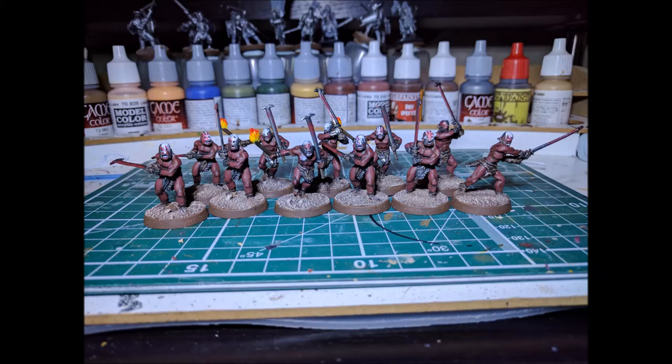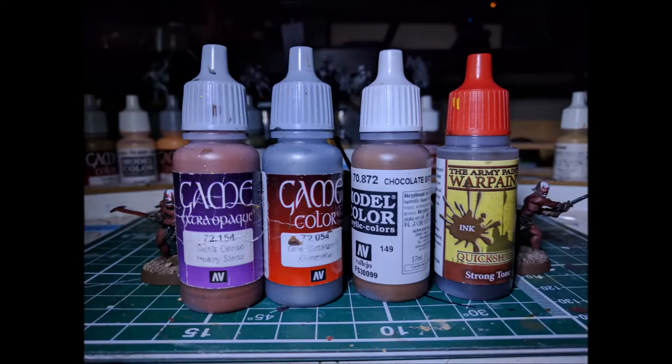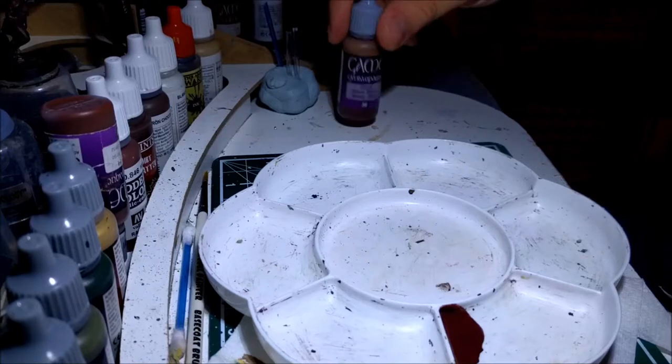For these ones I actually managed to mess up the recording process and forgot to record the beginning part. But I've just got a photo here which will show you just the colors that I used for the original bases. So I based the flesh with Heavy Sienna, which is quite a reddish brown from Vallejo. Then I based the metal and the leather. Then after that I gave them all a wash of the Army Painter Strong Tone.